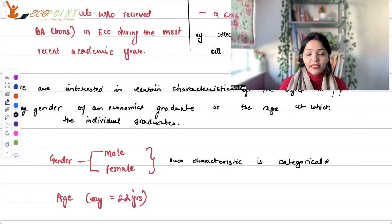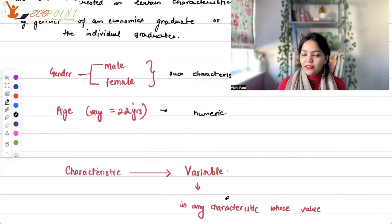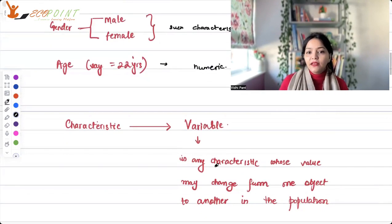Now gender is something that we can categorize, right? But on the other hand, if I'm talking about age, age will be a number. So that becomes numeric data. Now, these characteristics that we are talking about, these characteristics are taken as variables.